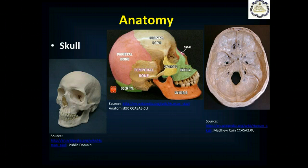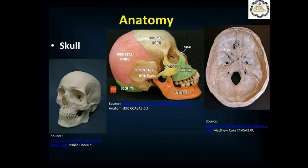Moving more posteriorly, you can see on both the right and left, small holes where the carotid arteries enter the skull. Then more posteriorly is a large hole — the foramen magnum — the big hole where the spinal cord comes out through the base of the skull. That's also where, when bleeding increases pressure in the skull and pushes the brain downwards, the brain tries to escape through the bottom. That's called brain herniation.